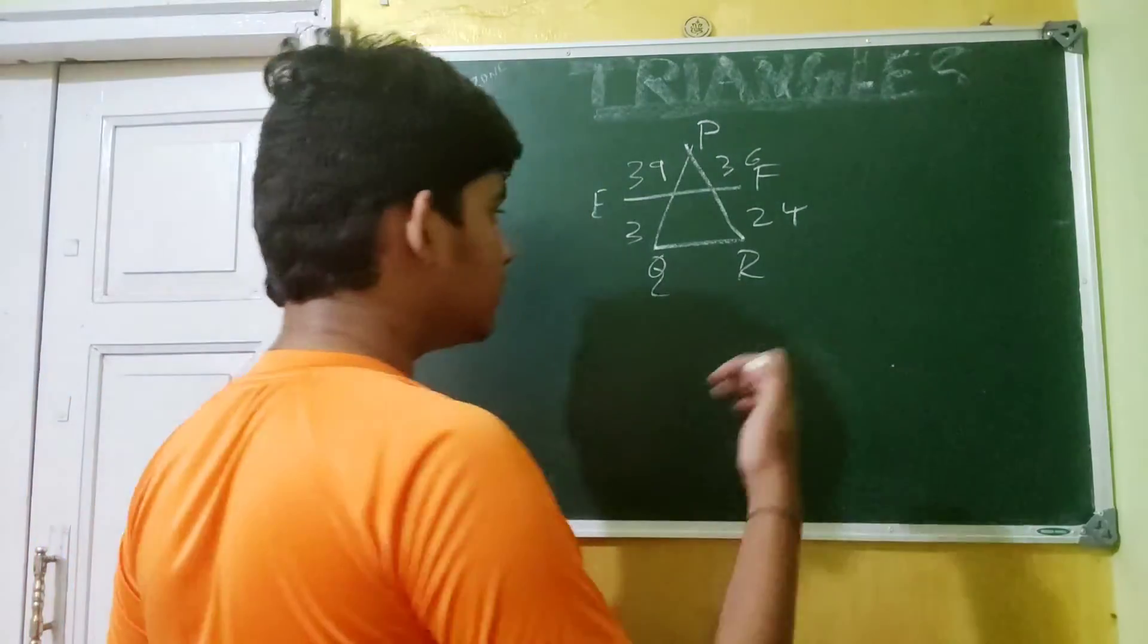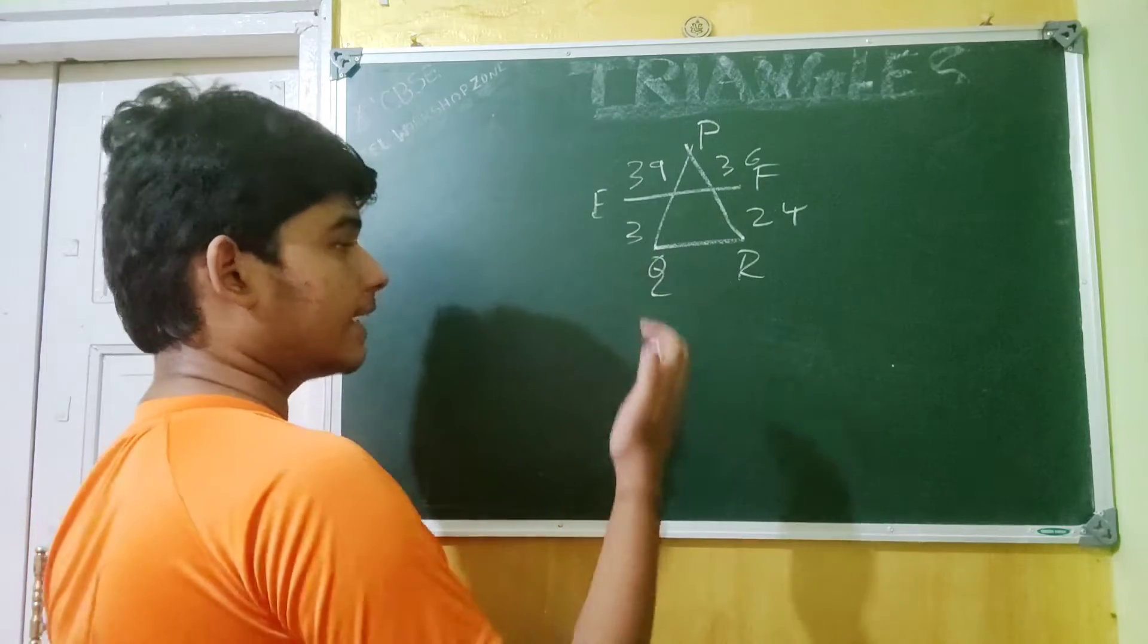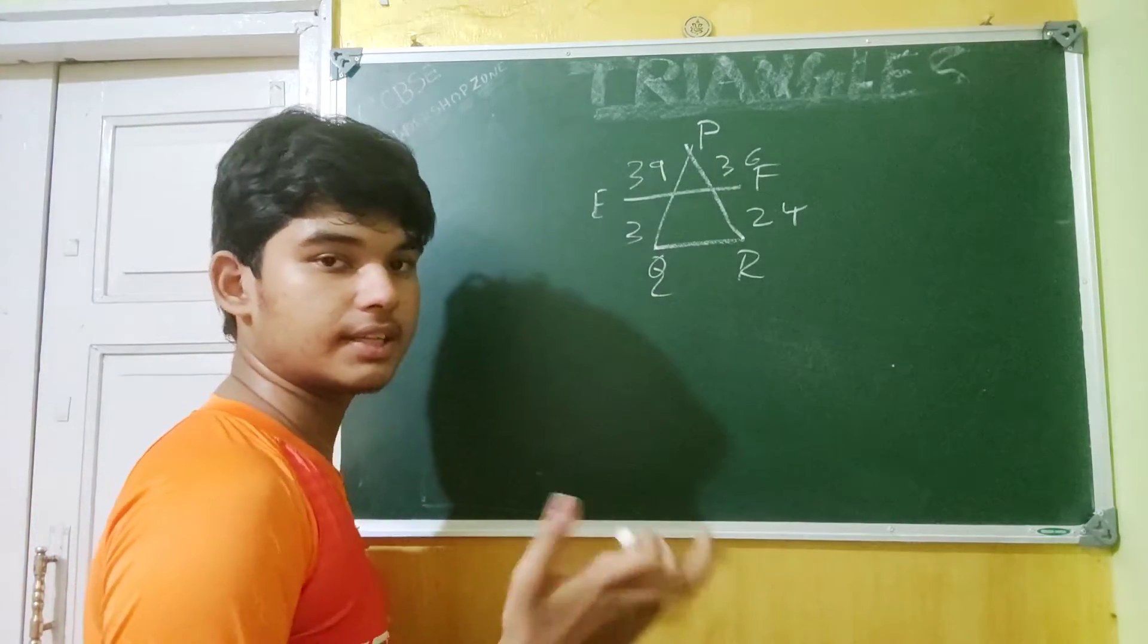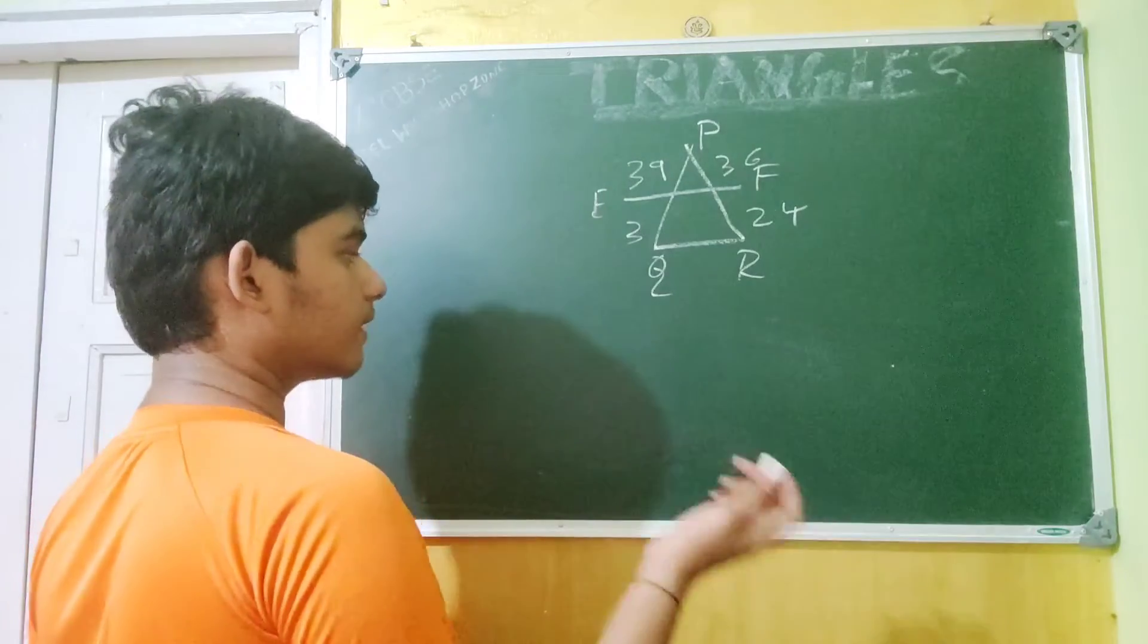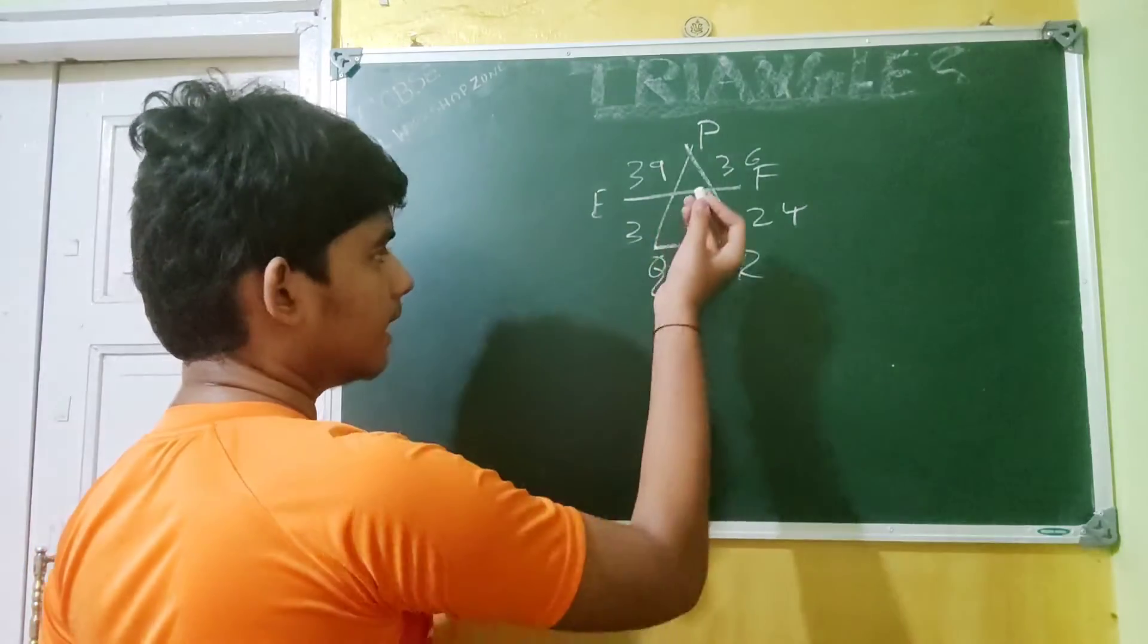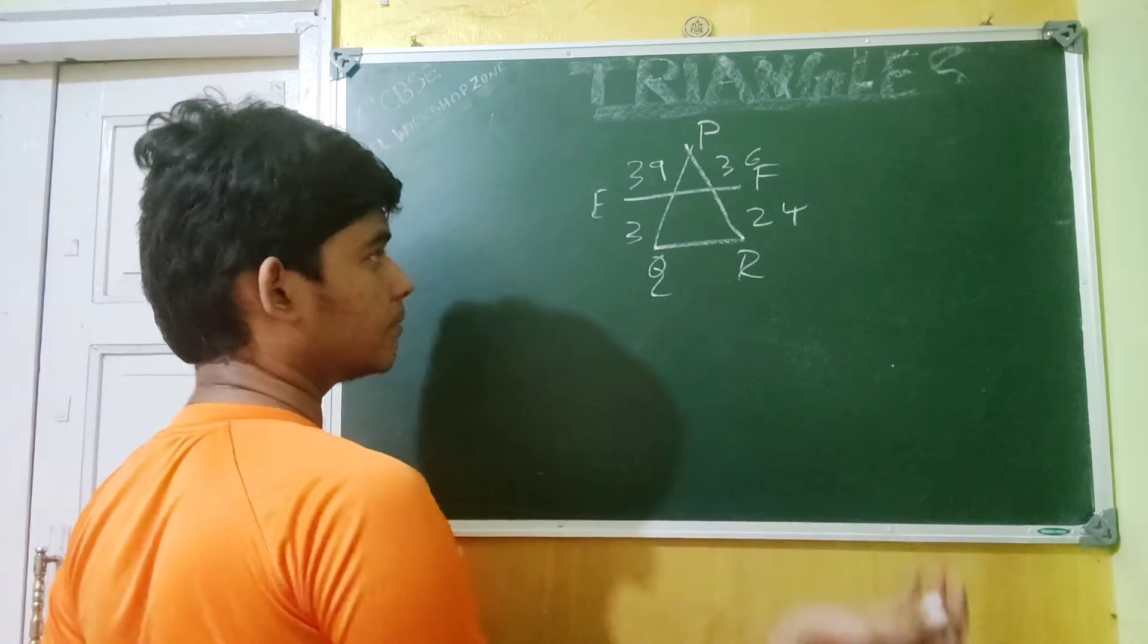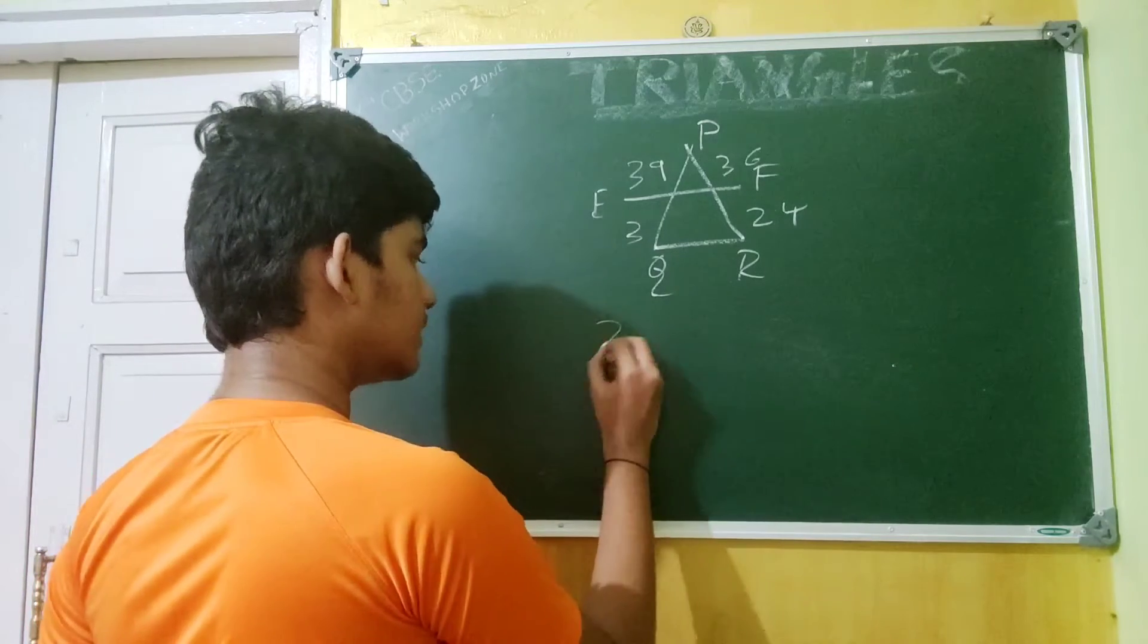We need to check whether this triangle is equal in each way, or not to prove but to check whether there is equal. So to do that, we can use PE by EQ is equal to PF by FR using basic proportional theorem. So let's check.